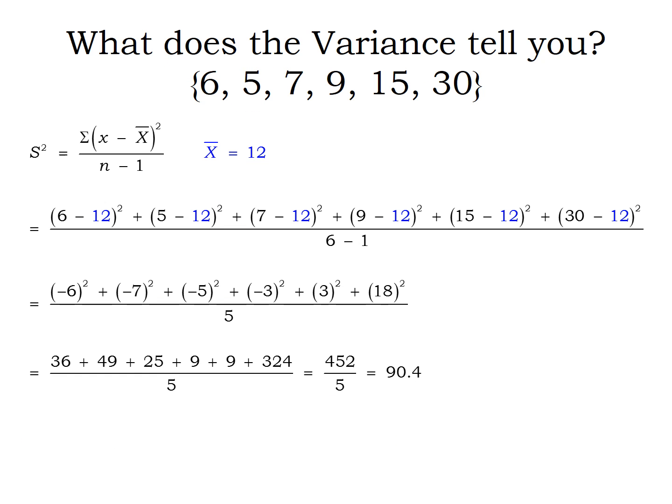So let's go back to the variance and figure out what it's telling us. So we're going to follow our formula. The first step we had was the x minus x̄. And we did this for each one of our values of x. So we need to understand what this is telling us. So this results in a negative 6, negative 7, negative 5, negative 3, 3, and 18.